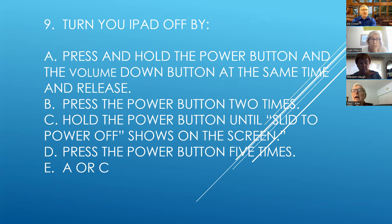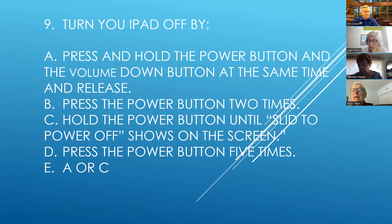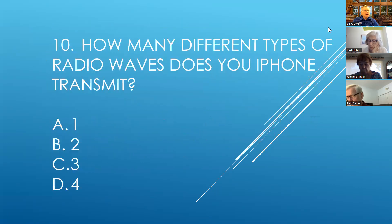Question nine: turn your iPad off by — A — press and hold the power button and volume-down button at the same time and release, B — press the power button two times, C — hold the power button until 'slide to power off' shows on the screen, D — press the power button five times, or E — A or C.